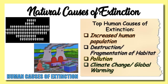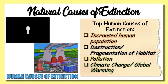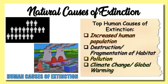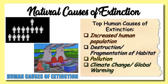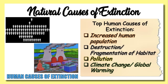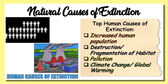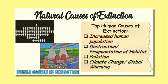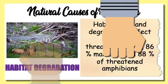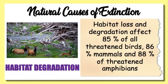These are the top human causes of extinction: increased human population; destruction and fragmentation of habitat; pollution such as water and air pollution; and climate change or global warming. Habitat loss and degradation affect 85% of all threatened birds, 86% of mammals, and 88% of threatened amphibians.